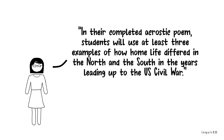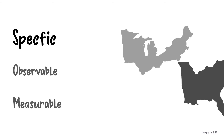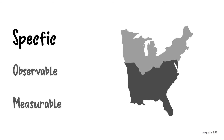Let's see how the rule applies to another example. In their completed acrostic poem, students will use at least three examples of how home life differed in the North and the South in the years leading up to the US Civil War. This LOOKFOR is specific because it targets student understanding of home life in two regions during a specific period of time.